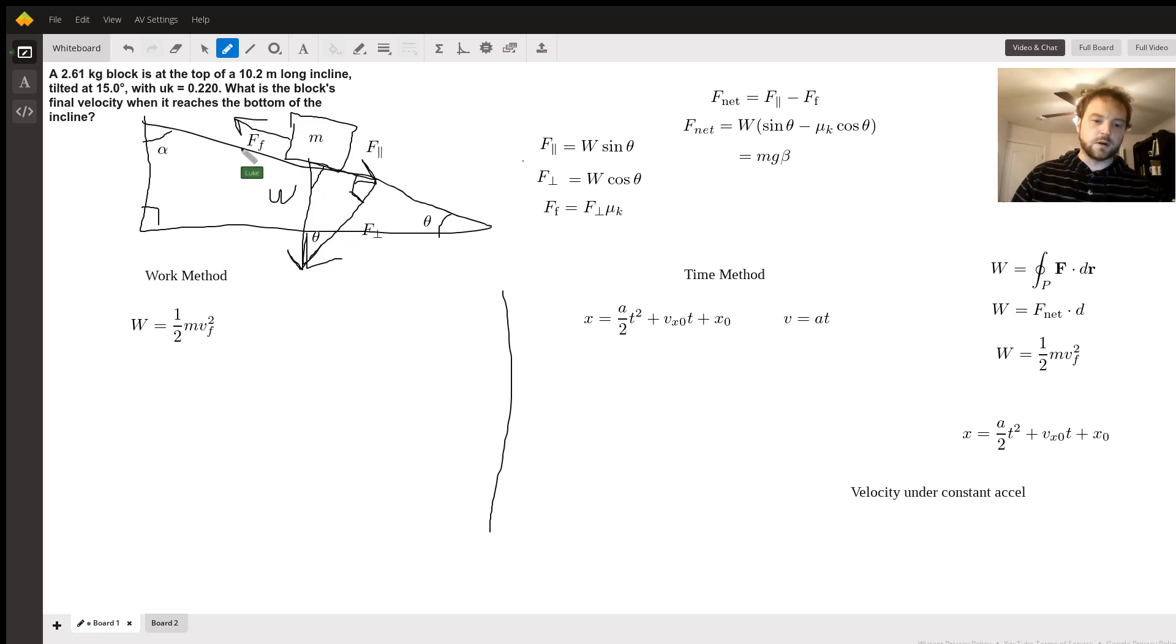The key trick here is because these angles are intersecting, this line is intersecting two parallel lines, this angle alpha has to be equal to this angle alpha. Which means because they're both right triangles, this angle theta has to be this angle theta. And that's how you get the parallel force is W sin(θ) and the normal force is W cos(θ).